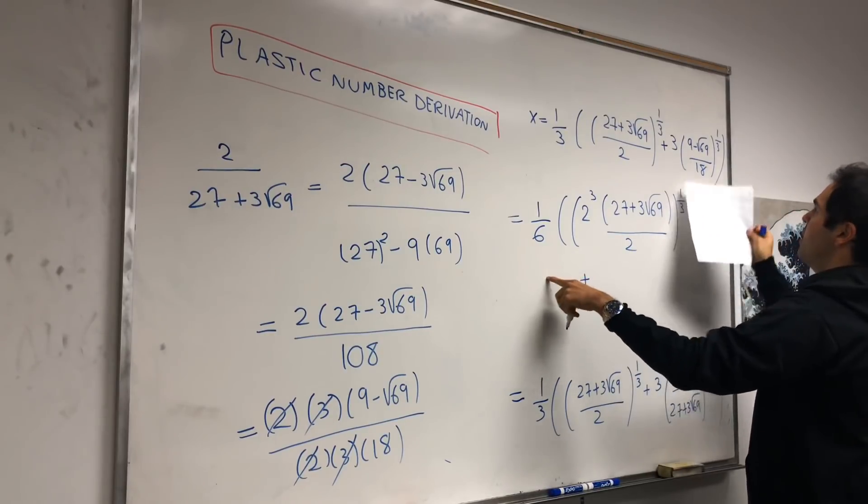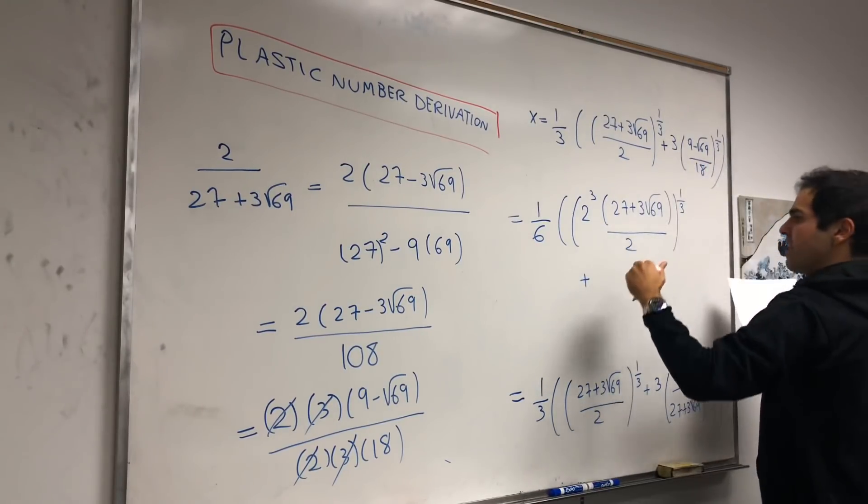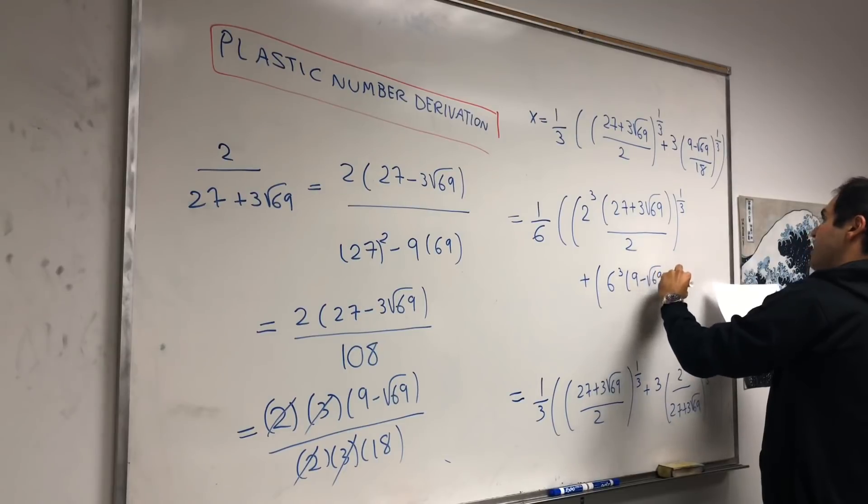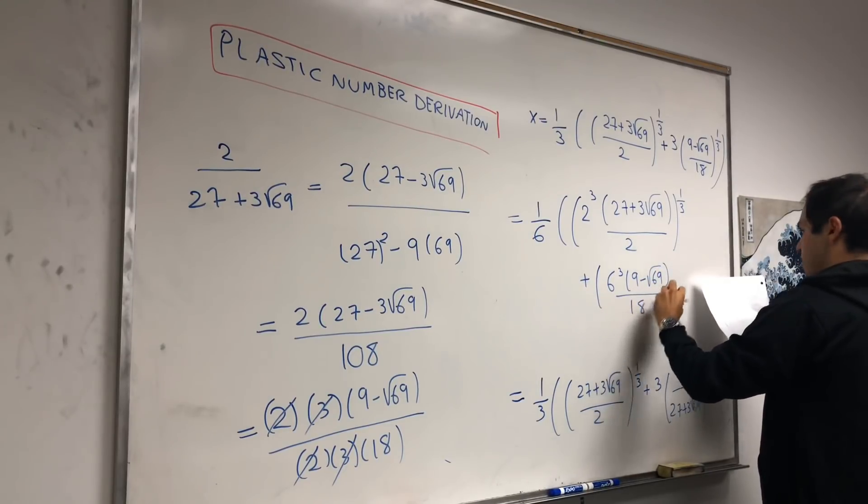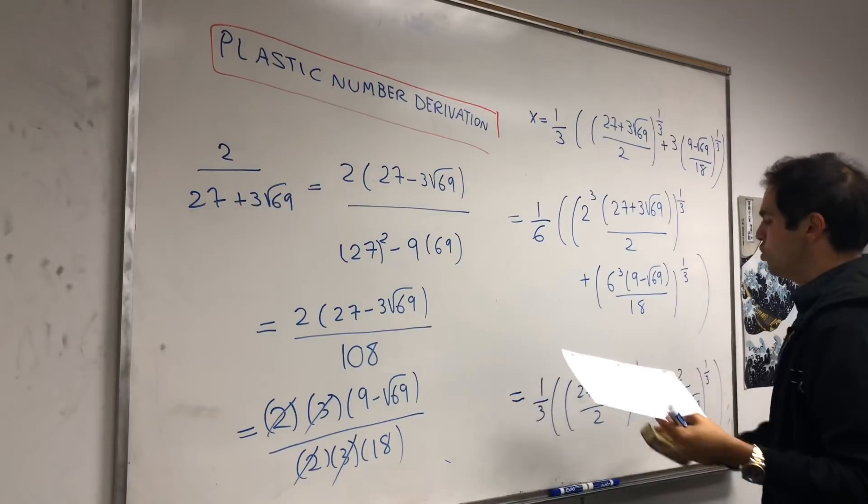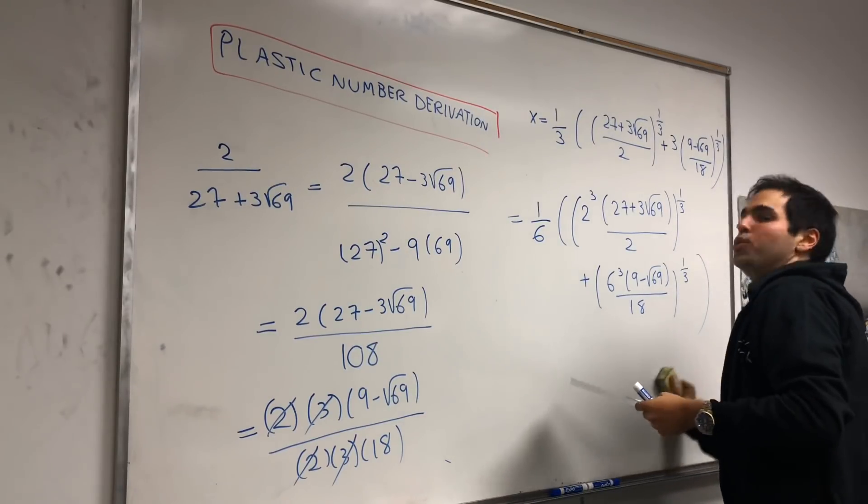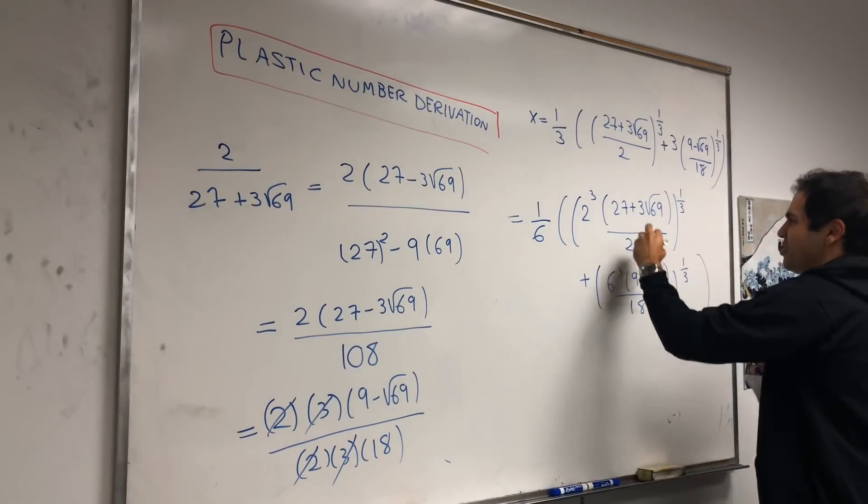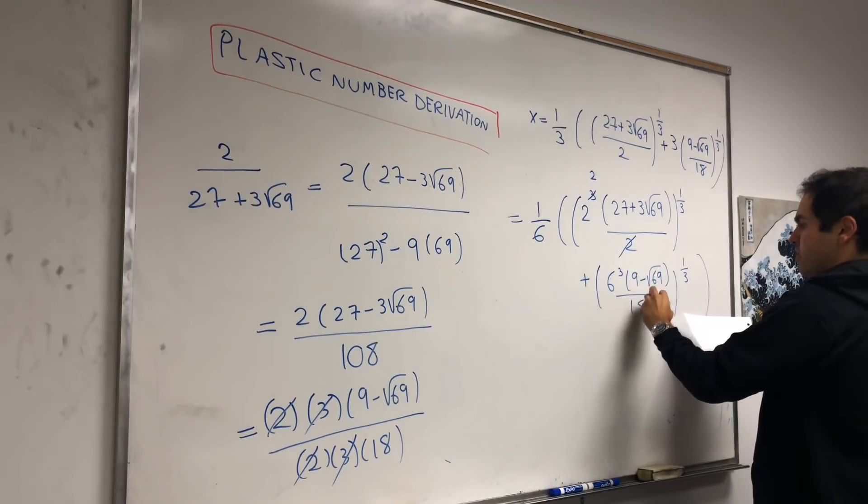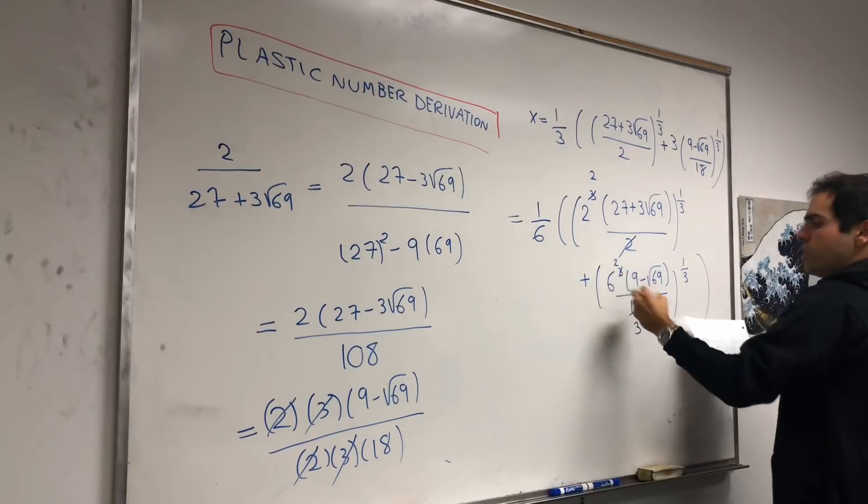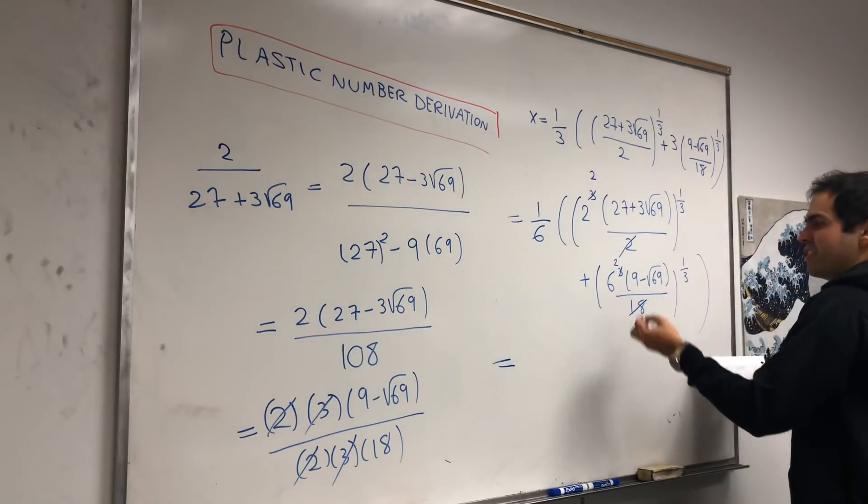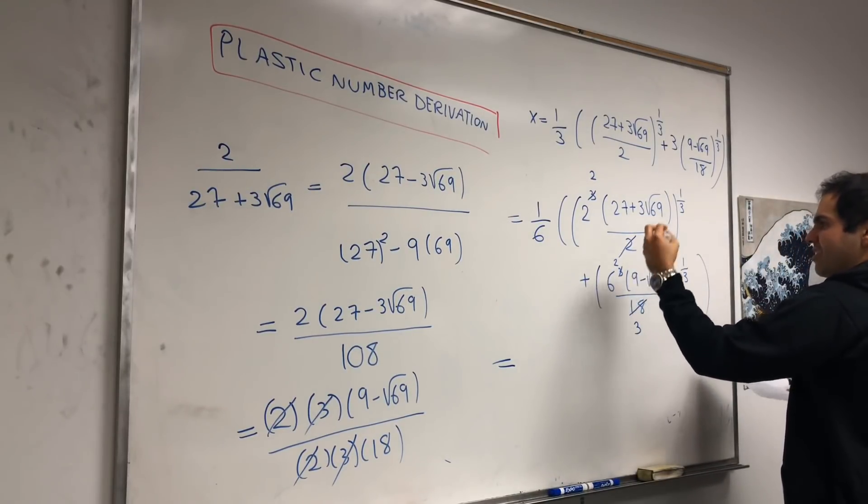and then plus, and again, this 3 becomes 6, so in that cube root, it becomes 6 cubed, 9 minus square root of 69, over 18, cube root, and then now let's just simplify it. So, the only thing we can say, 2 cubed over 2, 2 cubed, okay, no, 2 cubed over 2 becomes 2 squared. And, 6 cubed over 18, so 1 factor of 6 cancels out to become 3, so we get 6 squared over 3, and again, you can also simplify this, so 6 squared is 36 over 3, that's 12.